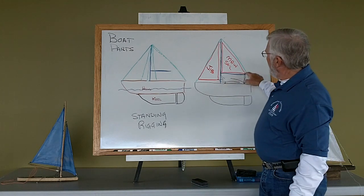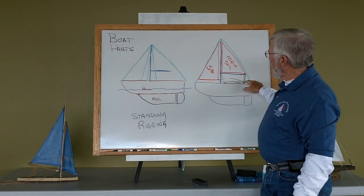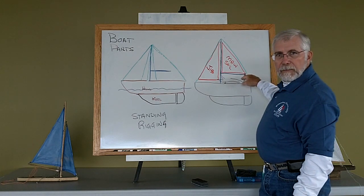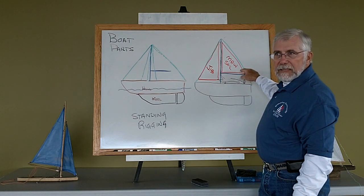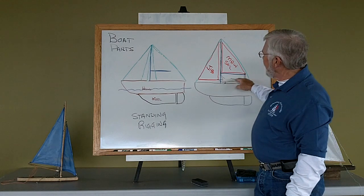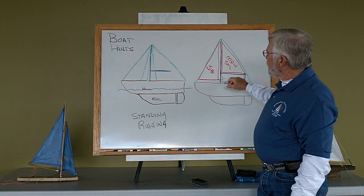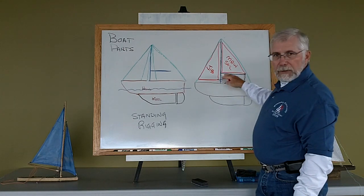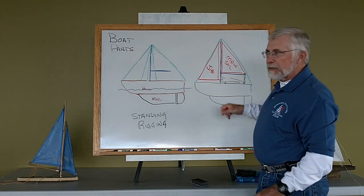And then I have a line in the back of the main that goes through a series of pulleys to give me mechanical advantage and then leads out. Now, these lines that control the movement of the sails are called sheets.